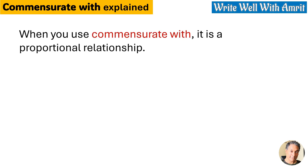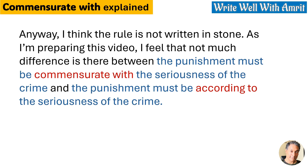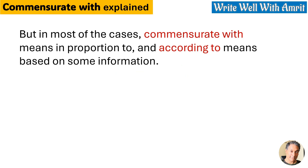When you use 'commensurate with,' it is a proportional relationship. When you use 'according to,' it is based on the source of information. The rule is not written in stone — as I prepare this video, I feel that not much difference exists between 'the punishment must be commensurate with the seriousness of the crime' and 'the punishment must be according to the seriousness of the crime.' But in most cases, 'commensurate with' means 'in proportion to' and 'according to' means 'based on some information.'